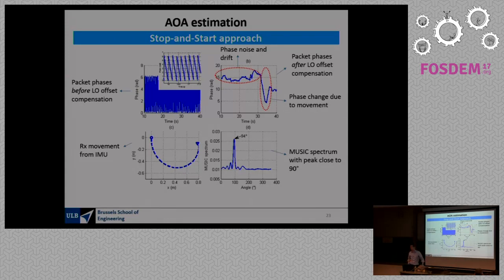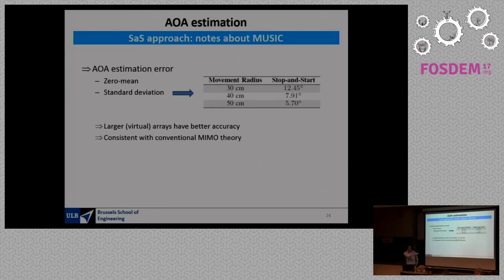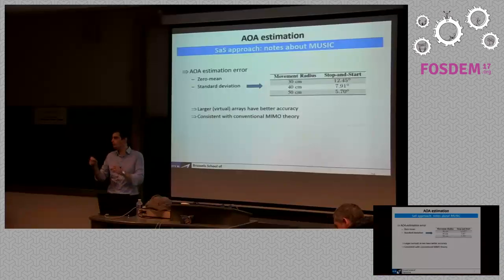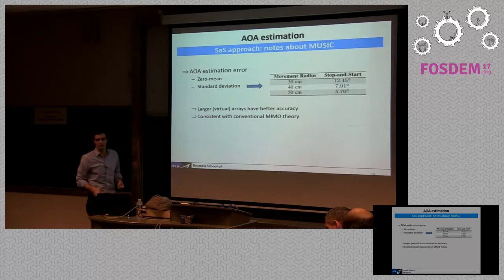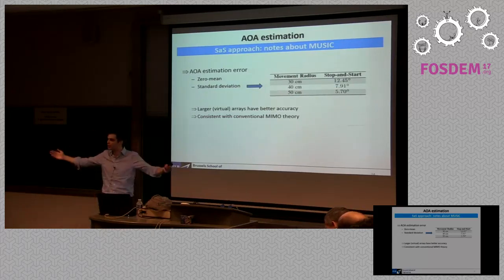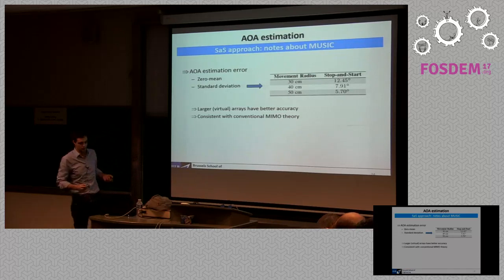Combining the phase of the different signals with the position at each packet reception and feeding this into a MUSIC angle of arrival estimation algorithm, you get the MUSIC spectrum with a clear peak at 94 degrees, which corresponds to our anechoic chamber setup. The real angle is 90 degrees, so we have a few degrees of error. Repeating this experiment multiple times gives the root mean square error for different radii — different distances of the IMU and radio from the turntable center. When we have a bigger movement, we have smaller error, consistent with MIMO theory: a larger array gives better resolution as long as you're not spatially subsampling.